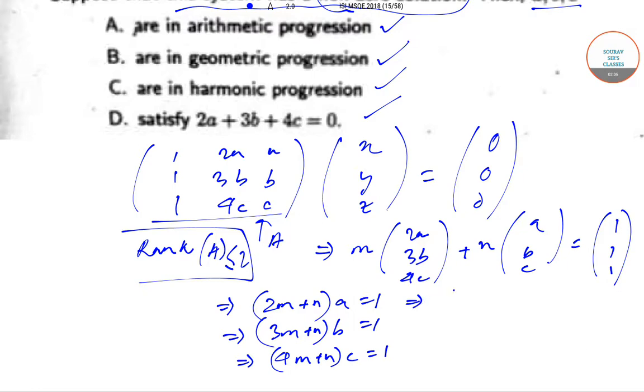So, this implies that 1/a equals 2M + N, 1/b equals 3M + N, and 1/c equals 4M + N.